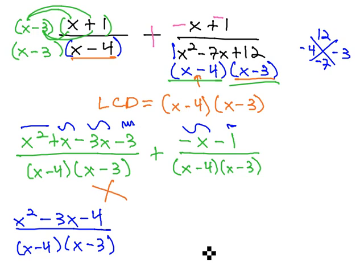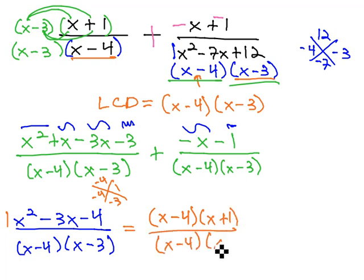Trying to factor that numerator to see if we can reduce, multiplying to negative 4 and adding to negative 3 is negative 4 and positive 1. And because there's a 1 in front of x squared, we have x minus 4, x plus 1 over x minus 4, x minus 3.